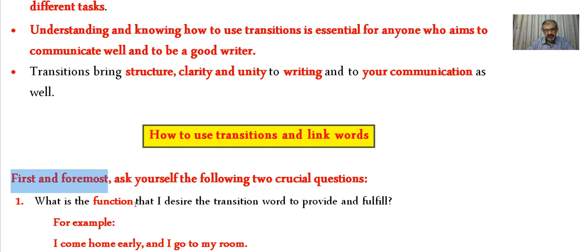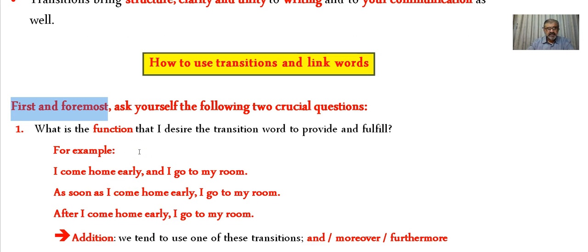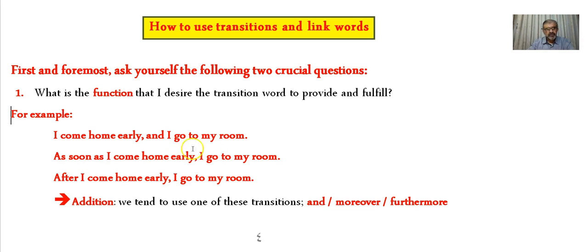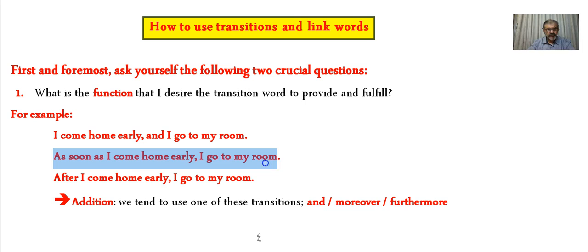Now the question is: how do you use transitions and link words? First and foremost, ask yourself two crucial questions. The first is: what is the function that I desire the transition word to provide and fulfill? For example, 'I come home early and I go to my room' — that is addition. 'As soon as I come home early, I go to my room' — that is a transition referring to time, showing two actions that happen in sequence based on habit.